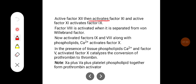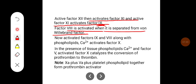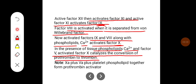Active Factor 12 then activates Factor 11. Active Factor 11 activates Factor 9. Factor 8 is activated when it is separated from von Willebrand factor. Activated Factors 9 and 8, along with phospholipids and calcium, activate Factor 10. In the presence of tissue phospholipids, calcium, and Factor 5, activated Factor 10 catalyzes conversion of prothrombin into thrombin. Activated Factor 10 plus activated Factor 5 plus platelet phospholipids together form the prothrombin activator.